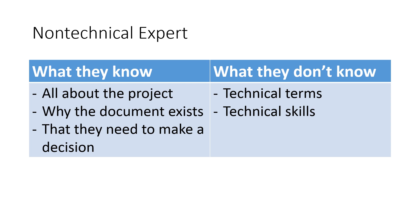What they don't know is technical terms and technical skills. That means one of two things: either they're going to completely skip all the sections that include technical terms, or they're going to require extensive background information. When writing a document for a non-technical expert, there are important things you need to include. One is a summary — that summary should tell them, if you don't read anything else, here's what you need to do from this document. The other is a background section; if they intend to dive in, they need that background before they can proceed.